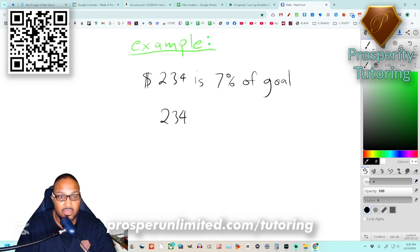We got two hundred thirty-four dollars and it is seven percent - with seven percent as a decimal we move the decimal two spaces backwards so it becomes point zero seven. And then the goal is X.